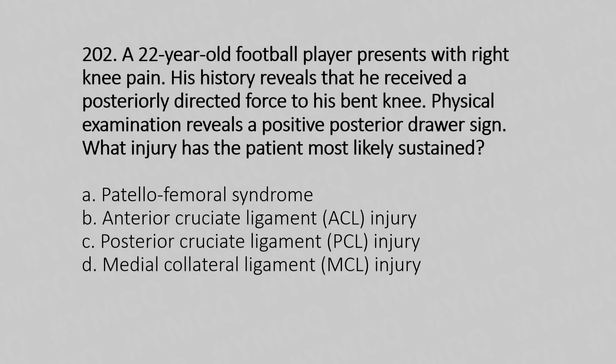Question 202: A 22-year-old football player presents with right knee pain. His history reveals he received a posteriorly directed force to his knee bent. Physical examination reveals a positive posterior drawer sign. What injury has the patient most likely sustained? Option A: Patellofemoral syndrome. Option B: ACL injury. Option C: PCL injury. Option D: Medial collateral ligament injury.